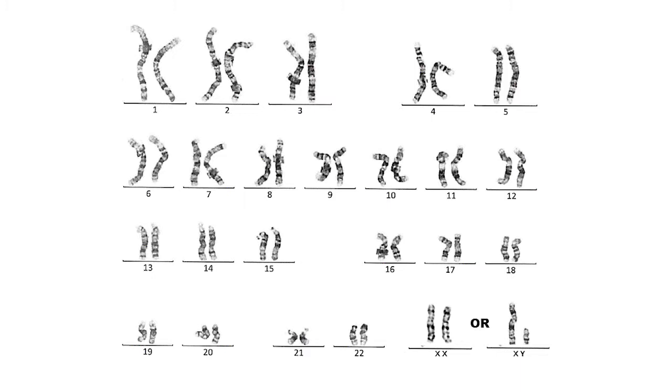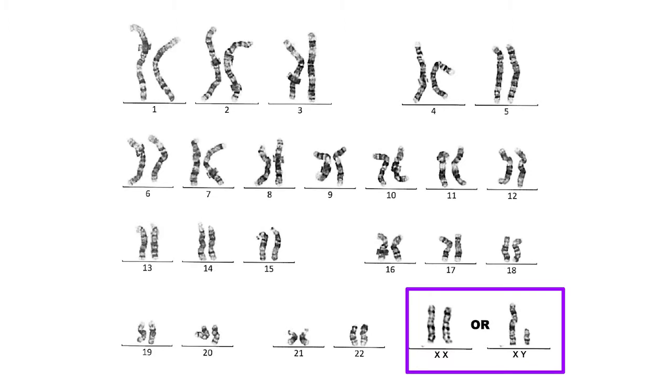22 chromosome pairs are the same for both men and women. The remaining pair of chromosomes determines sex. Typically, females have two X chromosomes and males have one X and one Y chromosome.